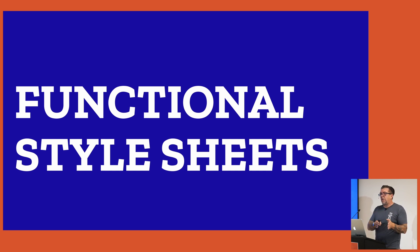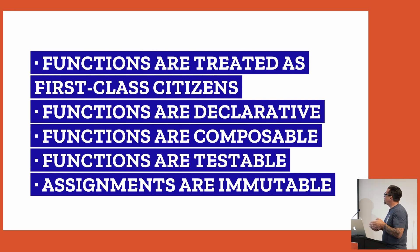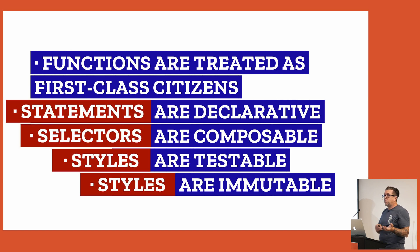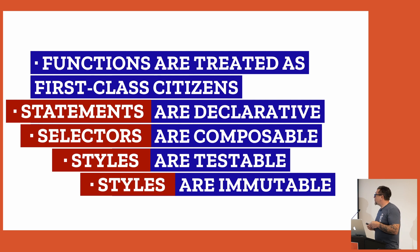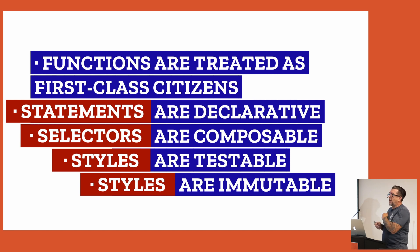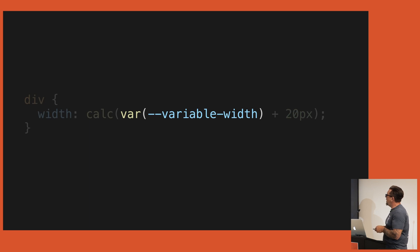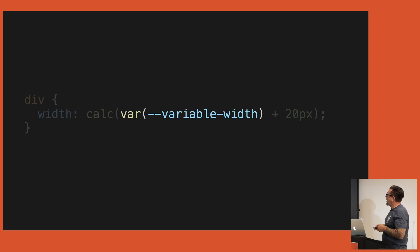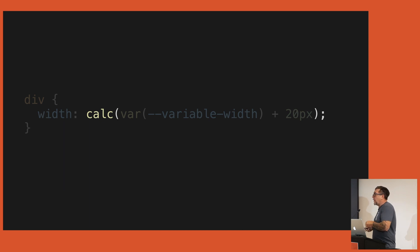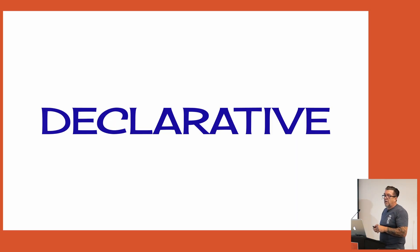We've now seen that if we make functions that are treated as first-class citizens — where they're declarative, composable, testable, and our assignments are immutable — we come up with the tenets that allow us to call our code functional programming. We're going to take those ideas across to functional style sheets, and rather than using those tenets from functional programming we're going to switch them a bit and apply some CSS properties to them.